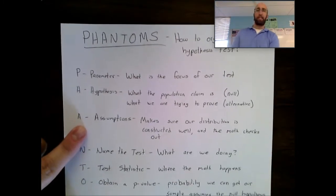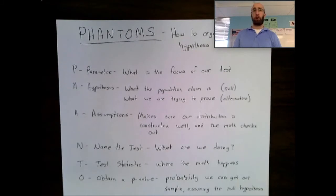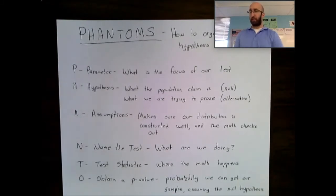The next piece, which a lot of students skip over, but it's so crucial, is the assumptions. This is going to make sure our distribution is constructed well. The formula we're going to use here is based on a sampling distribution. So we're constructing a distribution, and without that distribution being constructed well, the math isn't going to check out. Different assumptions are tied to different pieces in the formula. So without the assumptions, the formula is pretty much worthless to us.